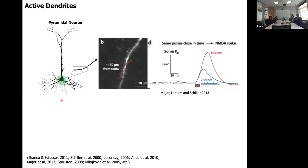The reason distal synapses can't make the soma spike is that the electrical current is lost along the way. The dendrites are leaky — it's like leaky pipes. You put a little pressure in at the end of the pipe and it all leaks out. There's also a loss at junctions where dendrites split, due to impedance mismatch.